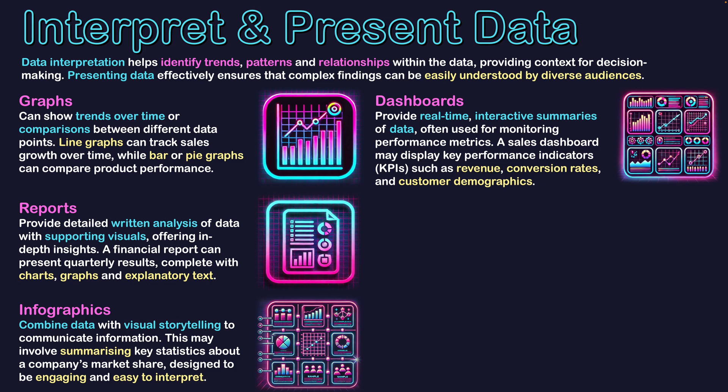For example, a sales dashboard may display key performance indicators (KPIs) such as revenue, conversion rates, and customer demographics. You could break up those demographics and focus on specific regions or stores, or look at revenue based on different sales figures. There are many ways data can be combined, connected, or isolated and focused on specific areas with tools available in the dashboard for making those changes in analysis with ease.